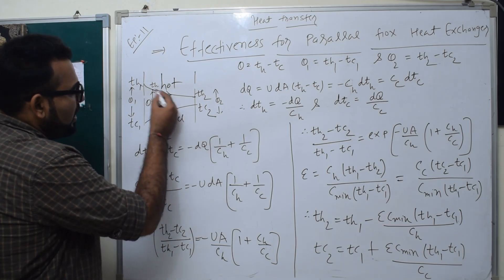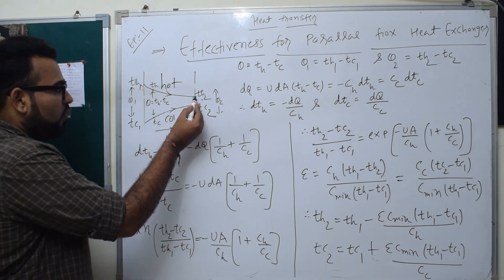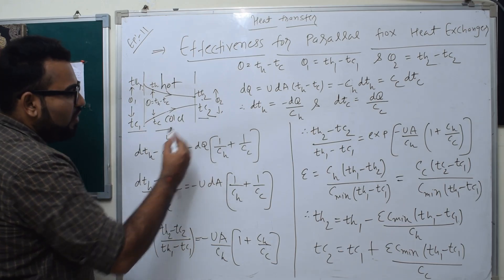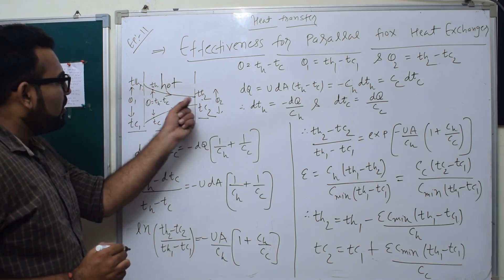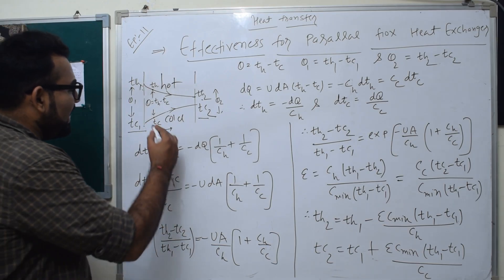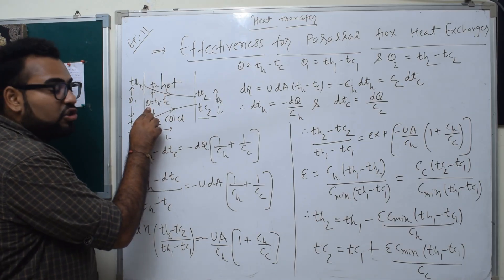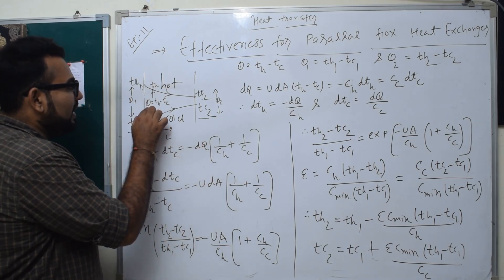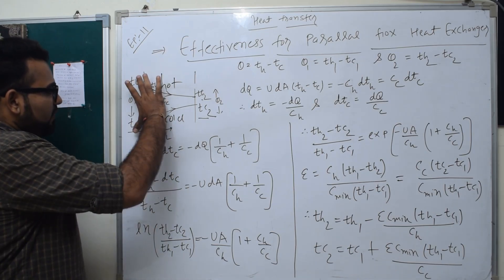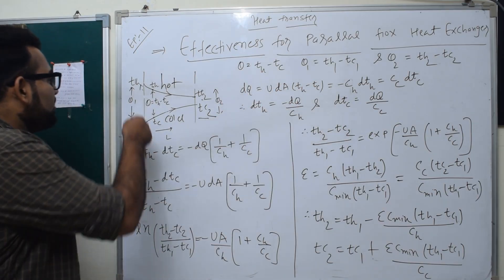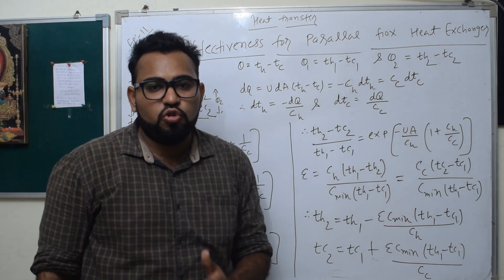What you see here — I have written Th. Th is the temperature of the hot fluid at any particular length, and Tc is the temperature of the cold fluid at any particular length. The temperature difference between hot and cold fluid is Th minus Tc, which is the local temperature difference at any point along the heat exchanger.